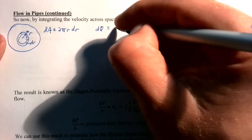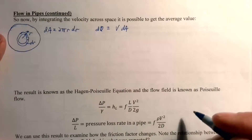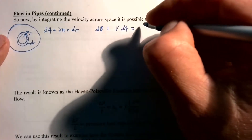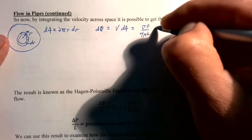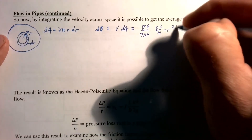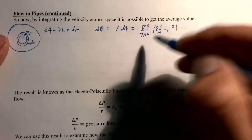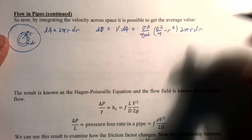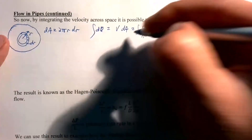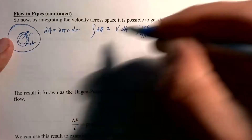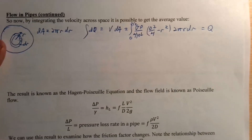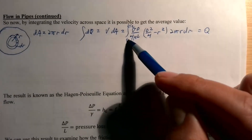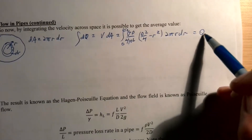The flow rate through that little piece is dQ = V·dA. The velocity from our last exercise is V(r) = (ΔP/4μL)(D²/4 − r²), and dA = 2πr·dr. Integrating from r = 0 to D/2 gives us the total flow rate Q across the whole cross-section.